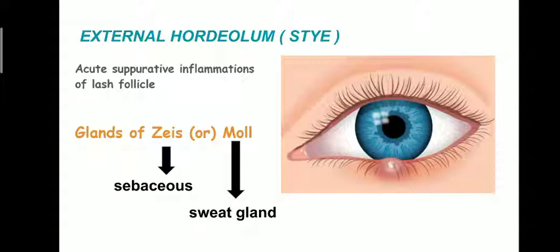First, external hordiolum, also called as stye. The external hordiolum is an acute suppurative inflammation of the follicles of eyelashes. That is, it is the inflammation of the glands of Zeis or Moll, which are accessory lacrimal glands. The glands of Zeis are sebaceous glands, whereas the glands of Moll are sweat glands. This image shows hordiolum externum, that is the stye.